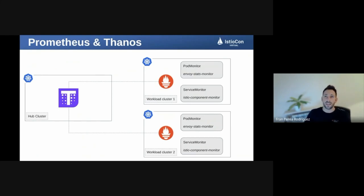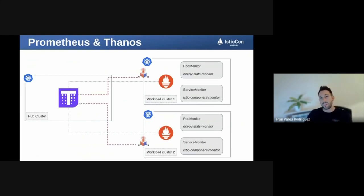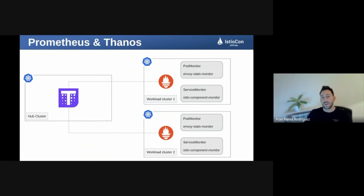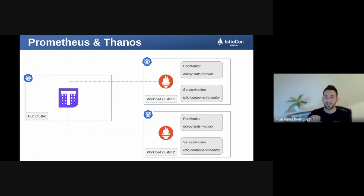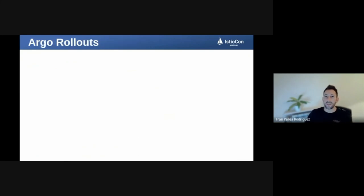The monitoring stack uses federated Thanos with Prometheus. Thanos is installed in the hub cluster where metrics are stored and centralized. Argo Rollouts and Kiali use Thanos to query metrics. Prometheus is installed in both workload clusters to scrape application metrics. Two additional resources are created to send metrics from Prometheus to Thanos — pod monitors and service monitors — created in both workload clusters as well.